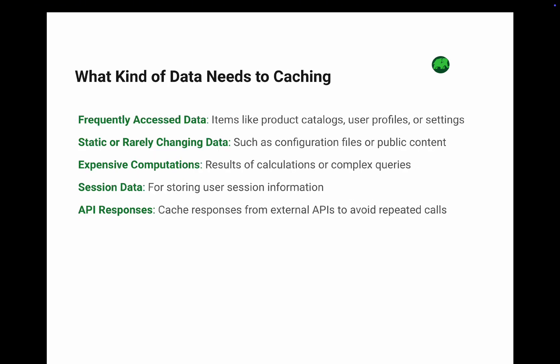Not everything in your app needs caching, but here is what should be on your radar. Number one: frequently accessed data — think product catalogs, user profiles, or app settings. Static or rarely changing data like configuration files or public content like blog posts. Expensive computations: save the results of heavy calculations or complex database queries. Session data: keep user session information handy. API responses: avoid repeated calls to external APIs by caching responses.